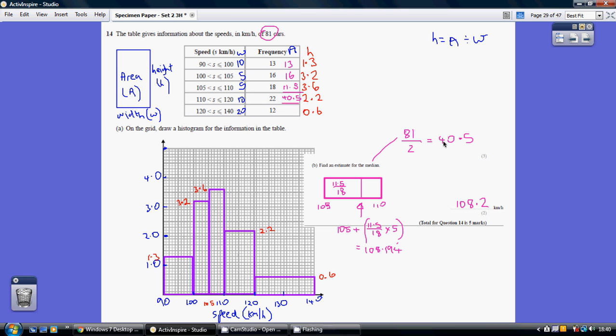So I need to build up an area on the left hand side of 40.5. Now the area of this first bar is 13, the area of the second bar is 16, so so far we've got an area of 29.